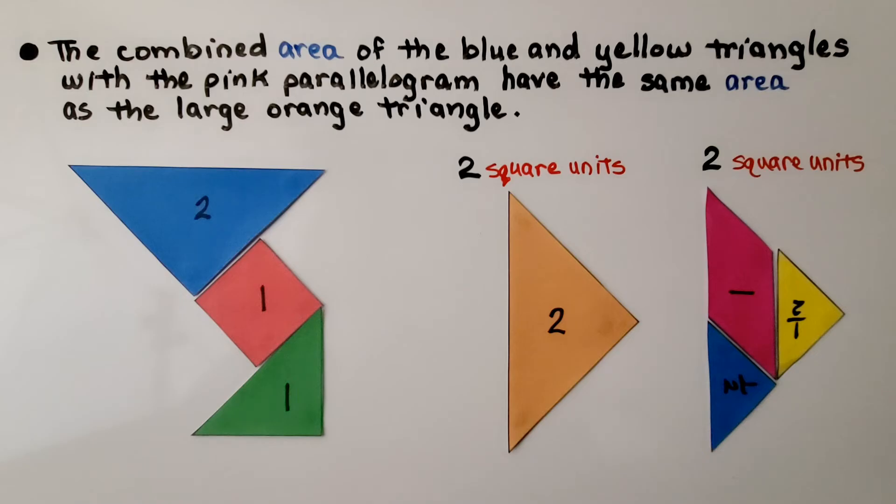The combined area of the blue and yellow triangles with the pink parallelogram have the same area as the large orange triangle. That's two square units. And here we have one and two halves. That's two square units.